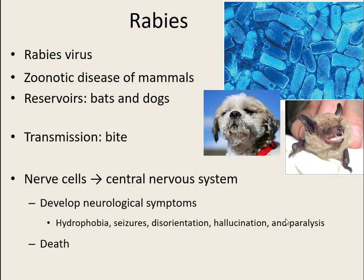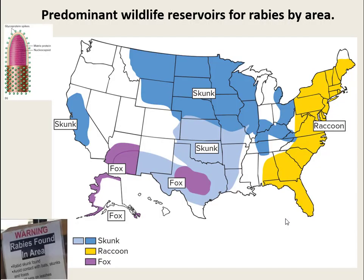By the time you wait to see what happens, there's nothing else they can do for you. The predominant wildlife reservoir for rabies in our area is the skunk, but generally people don't have much interaction with them. The animals of real concern are dogs and bats, because these can bite you, bite infected animals, and then bite you — making them key transmission vectors.